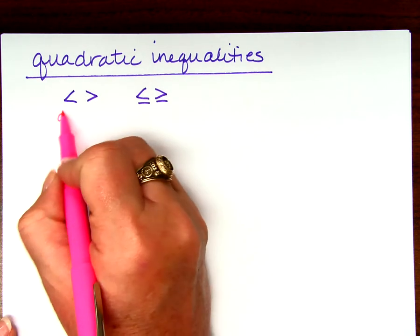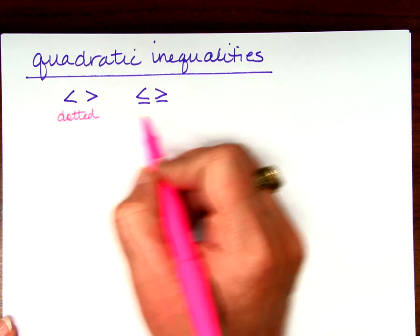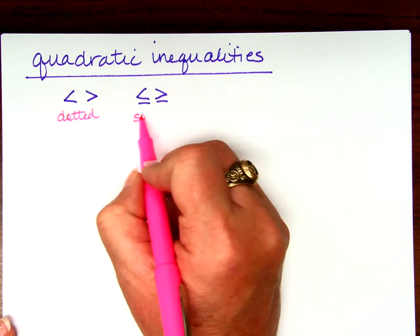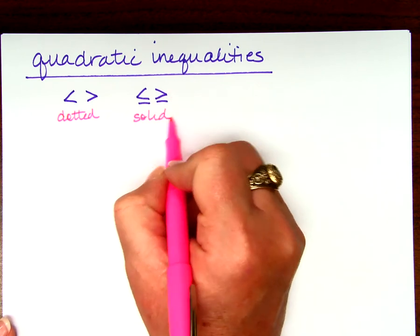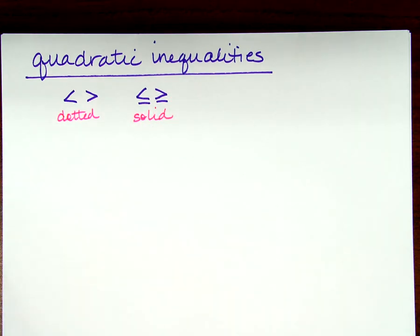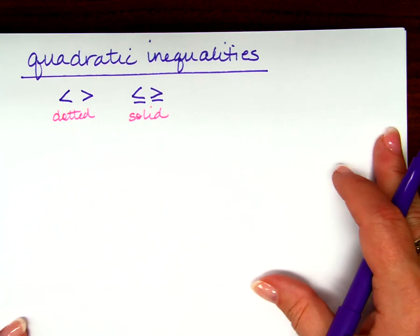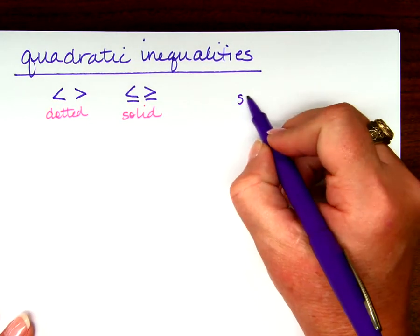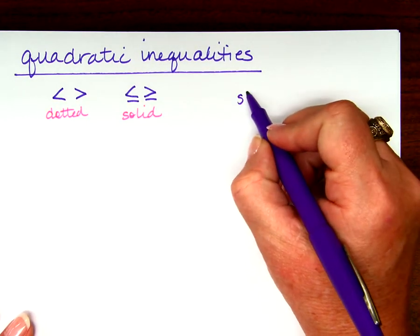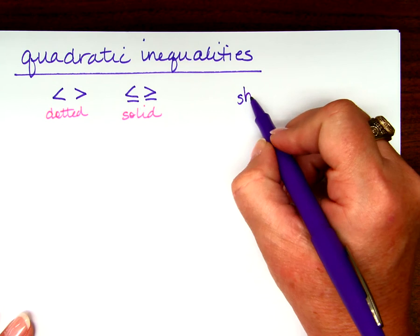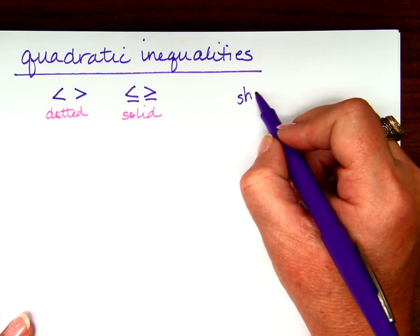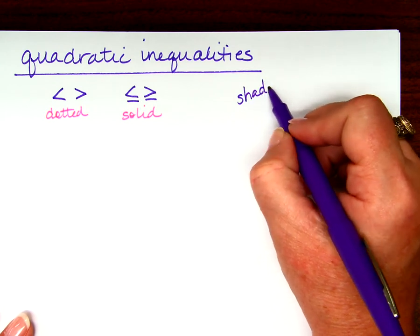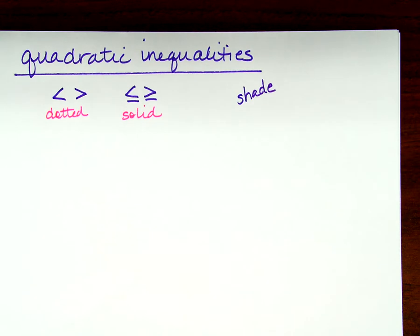A dotted line for strict inequalities, and a solid line for less than or equal or greater than or equal. What else do we usually have to do if we're graphing? We have to shade, right?